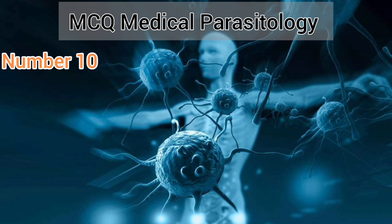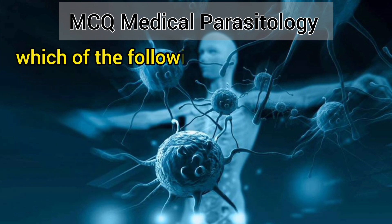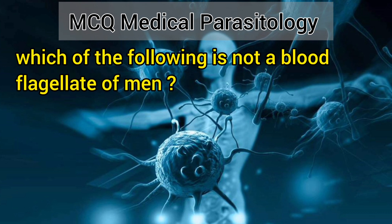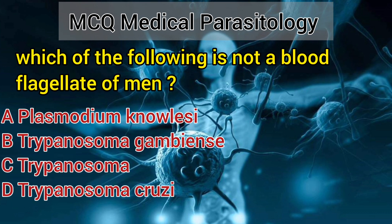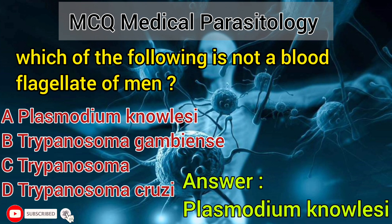Number 10. Which of the following is not a blood flagellate of man? A. Plasmodium malariae. B. Trypanosoma gambiense. C. Trypanosoma. D. Trypanosoma cruzi. Answer: Plasmodium malariae.